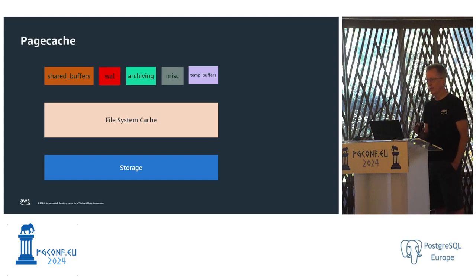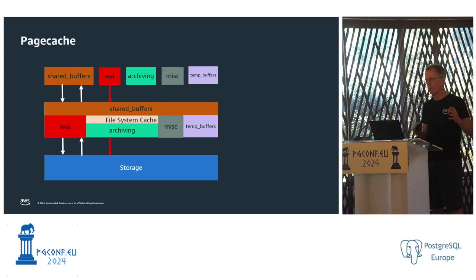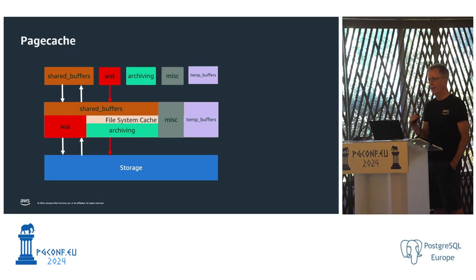The page cache is very challenging because it holds a lot of different stuff. When you want to read something, first you look in shared buffers; if it's not there, it goes to the file system cache; if it's still not there, it reads from storage through the file system cache back to shared buffers. Some of shared buffers will be duplicated in the file system cache. WAL archiving and other things also use the file system cache. If some other application touches a lot of files and uses more RAM, the amount cached for shared buffers gets smaller — so running other things on your system affects your file system cache and is hard to tune.